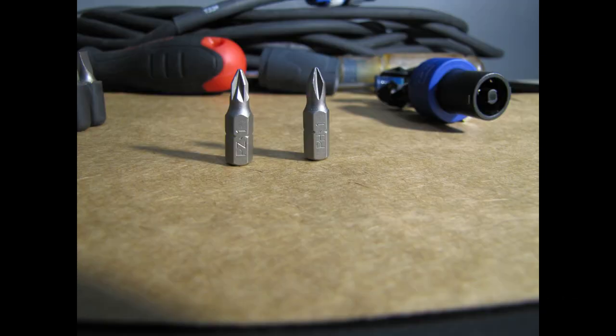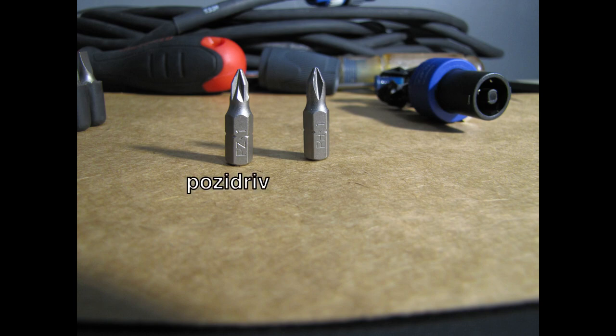Okay, so here are the bits that I referenced before. One of them is a Phillips and the other one is a Pozidriv. Now, if you notice, the bit that has PZ on it, which is actually engraved on the bottom part of the bit, that is a Pozidriv bit. And the other one has PH. That stands for Phillips.